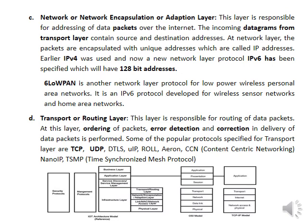The transport or routing layer is responsible for routing data packets. At this layer, ordering of packets, error detection and correction, and delivery of data packets is performed. Some popular protocols specified for the transport layer are TCP, UDP, DTLS, micro IP, IRON, CCN, nano IP, and TSMP.